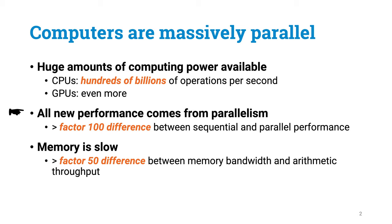You have already got a more than factor 100 difference between sequential and parallel performance in your computer. And while we get more and more new arithmetic performance thanks to parallelism, it gets more and more difficult to keep the processor busy, as the main memory is just so ridiculously slow.